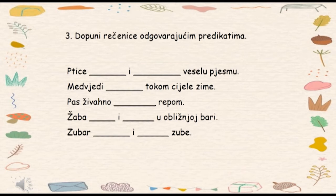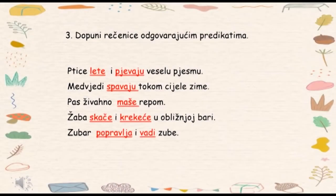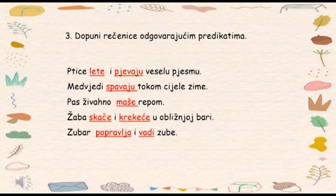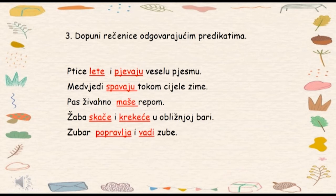Kako bi glasile ove rečenice? Pa, mogle bi da glase i ovako: Ptice lete i pjevaju veselo u pjesmu. Medvijedi spavaju tokom cijele zime. Pas živahno maše repom. Žaba skače i krekeće u obližnjoj bari. Zubar popravlja i vadi zube.